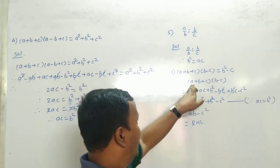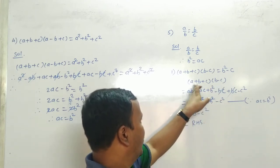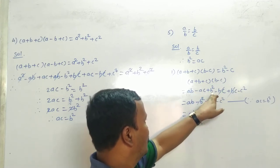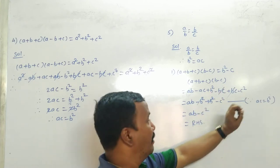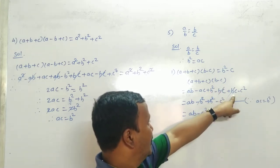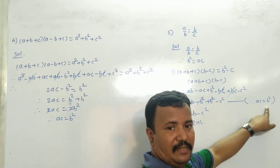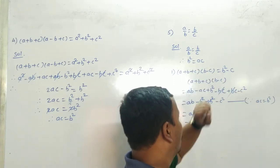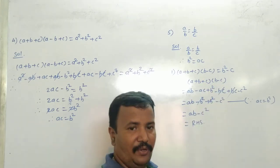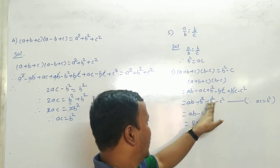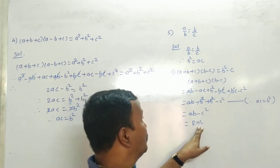पहले इसको solve करते हैं: (A + B + C)(B - C). A into B = AB, A into minus C = minus AC, B into B = B square, B into minus C = minus BC, C into B = BC, C into minus C = minus C square. Again BC and minus BC cut हो गए। अब AC के जगह पर B square लिख सकते हैं because B square is equal to AC।